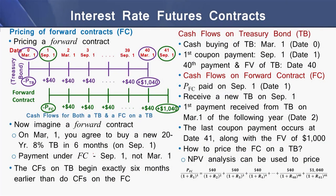Now let's come to the pricing of a forward contract using these treasury bonds. On screen we see two types of cash flows — one in purple and one in green. The purple cash flows represent the cash flows on the treasury bond, starting from March 1 and ending on March 1 of the 40th period, giving 40 cash flows. The green cash flows relate to the treasury bond forward contract, starting from September 1 and extending to the 41st period.